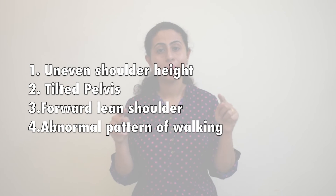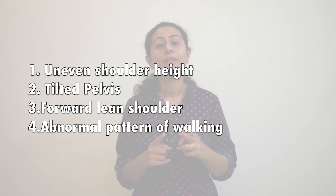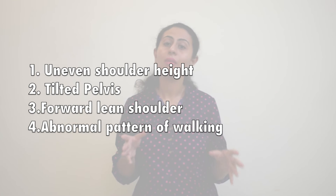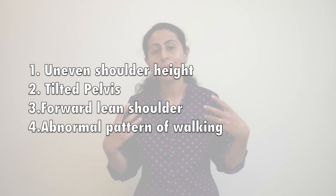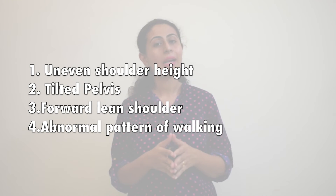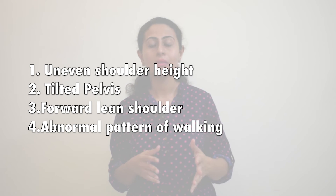The best way to manage spinal deformity is early identification. It is very important that periodic checkups are done for your child, and postural assessments are carried out. Look for signs such as uneven shoulder height, a pelvis or body tilted to one side, shoulders that appear more forward, or an abnormal walking pattern. If you notice any of these signs, make sure you see your doctor as soon as possible.